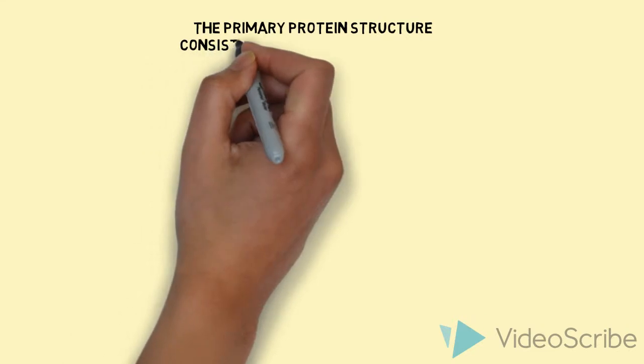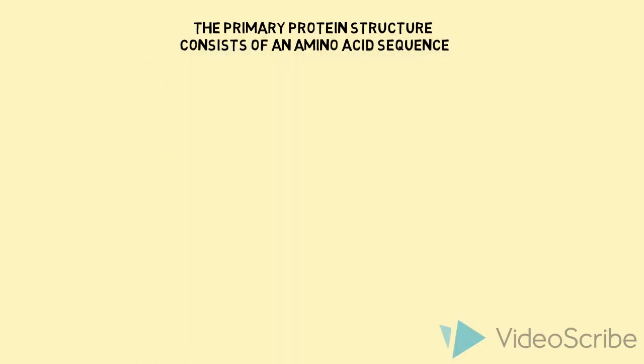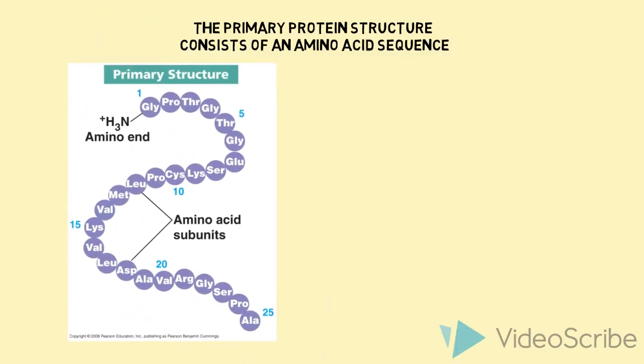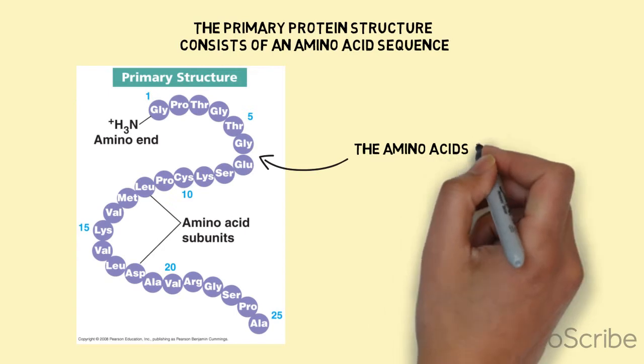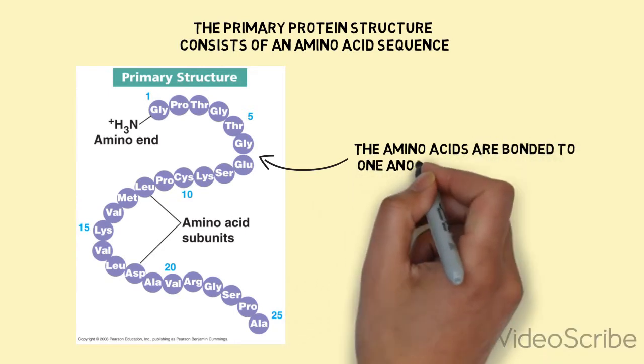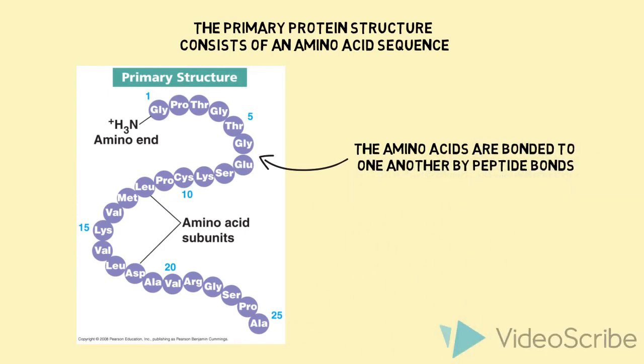The primary protein structure consists of an amino acid sequence. As you can see in the picture on the left, the amino acid subunits are all connected, each forming a chain. The amino acids are bonded together by peptide bonds.